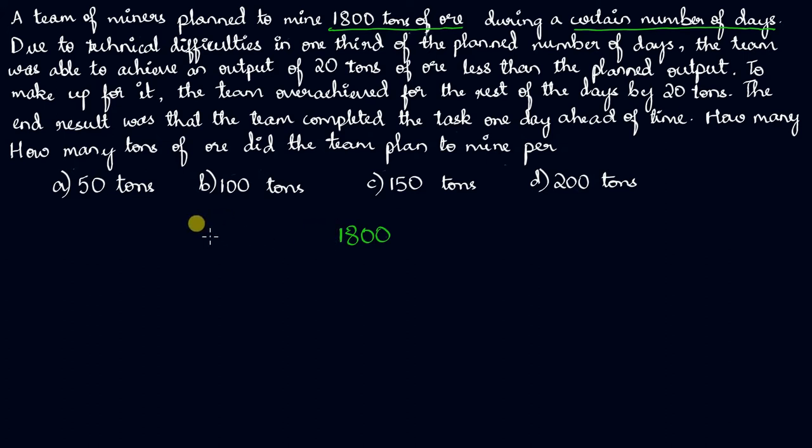Which means that if x is the number of tons they had to mine per day and y is the number of days they planned to do it for, the product of x and y should be equal to 1800. Which means tons per day times the number of days should give you the total quantity mined, which is 1800.